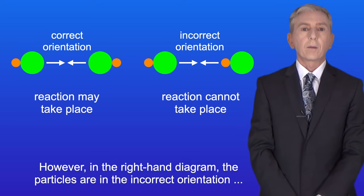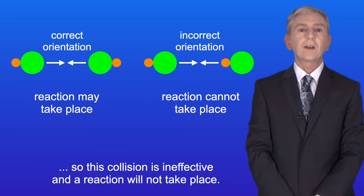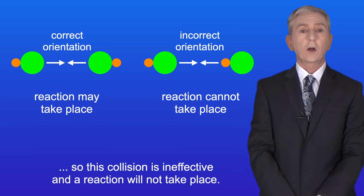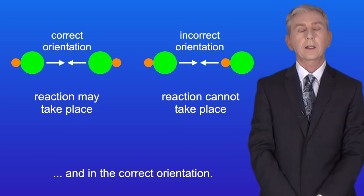However, in the right hand diagram, the particles are in the incorrect orientation. So this collision is ineffective and a reaction will not take place. So in order to react, particles must collide with sufficient energy and in the correct orientation.